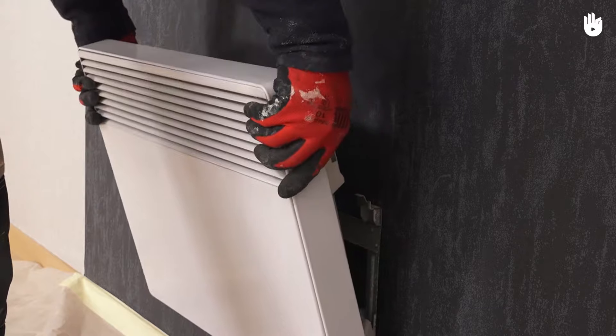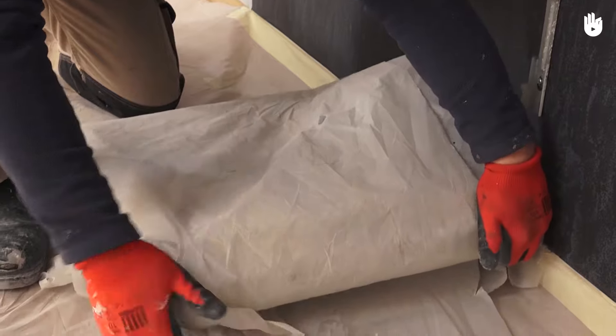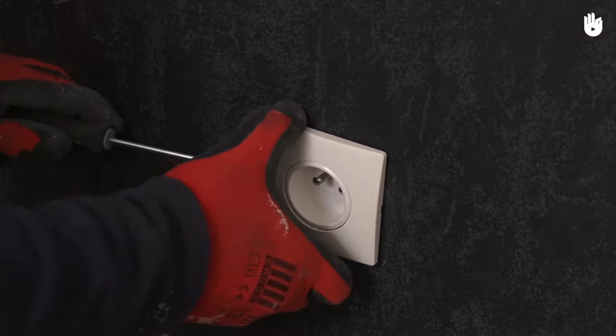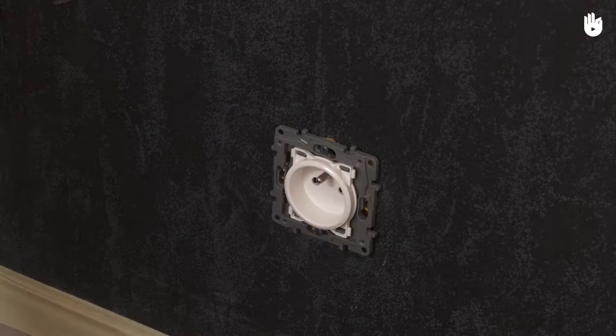If you have a wall-mounted radiator, for example, remove and cover it to protect it. Sockets and switches need to be carefully protected with adhesive tape and a plastic sheet.